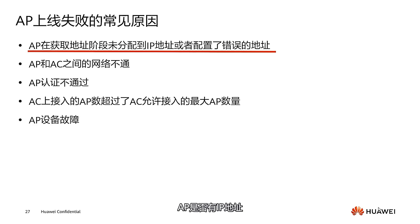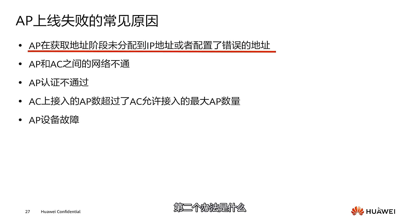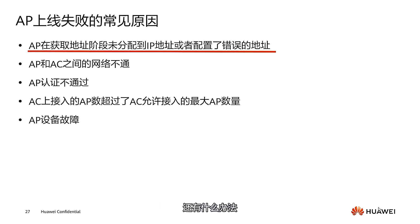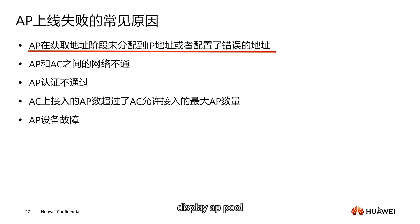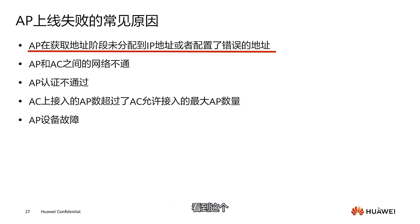How do you check if an AP has an IP address? If you are experimenting with ENSP, just double-click on the AP and use the 'display IP interface' command. You can also use 'display AP all' on the AC, but since the AP is failing to go online, you won't see the information. The most direct approach is to check the DHCP address pool using the command 'display IP pool [pool name] used', which shows currently used and newly allocated IP addresses, allowing you to determine whether the AP has obtained an IP.